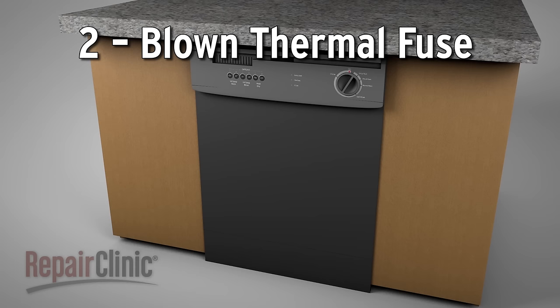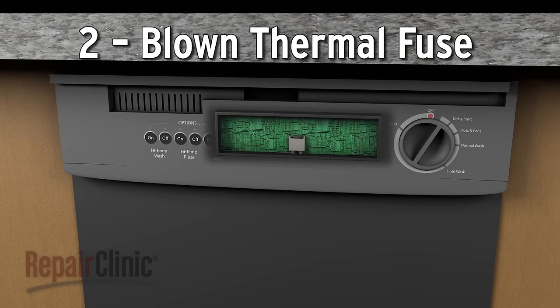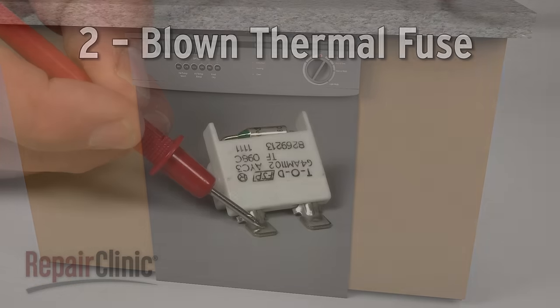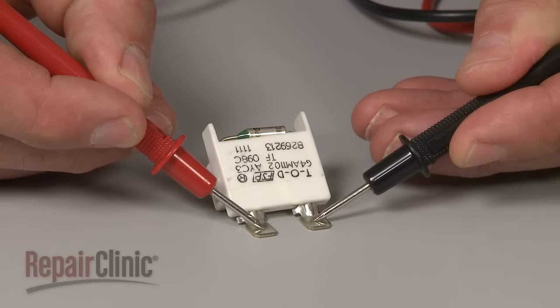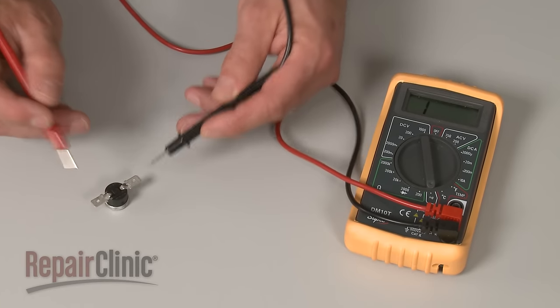Some dishwasher models have a thermal fuse that may be located near the bottom of the tank, or on or near the control board. The fuse will blow if the dishwasher overheats, cutting off power to the appliance. Again, you can use a multimeter to determine if the fuse has continuity. If not, then the fuse has blown and will need to be replaced.